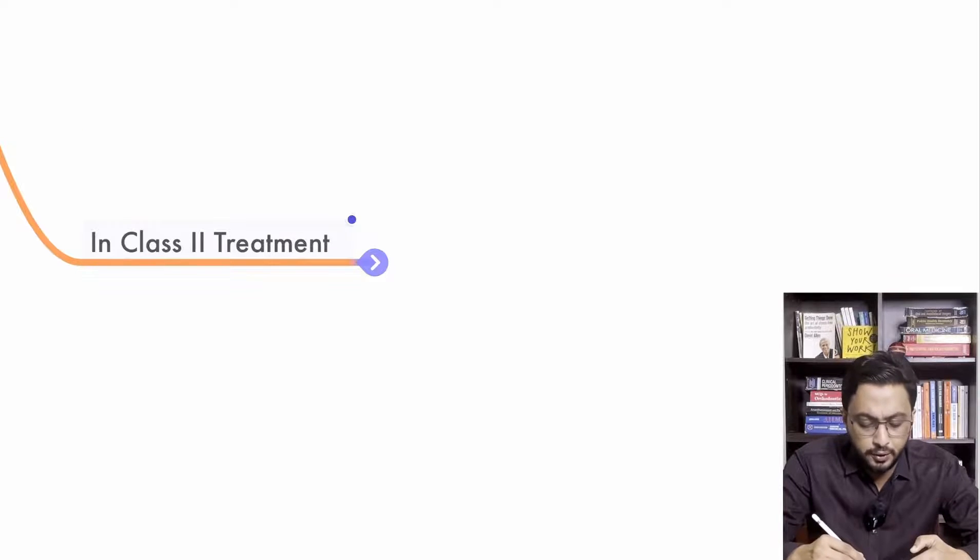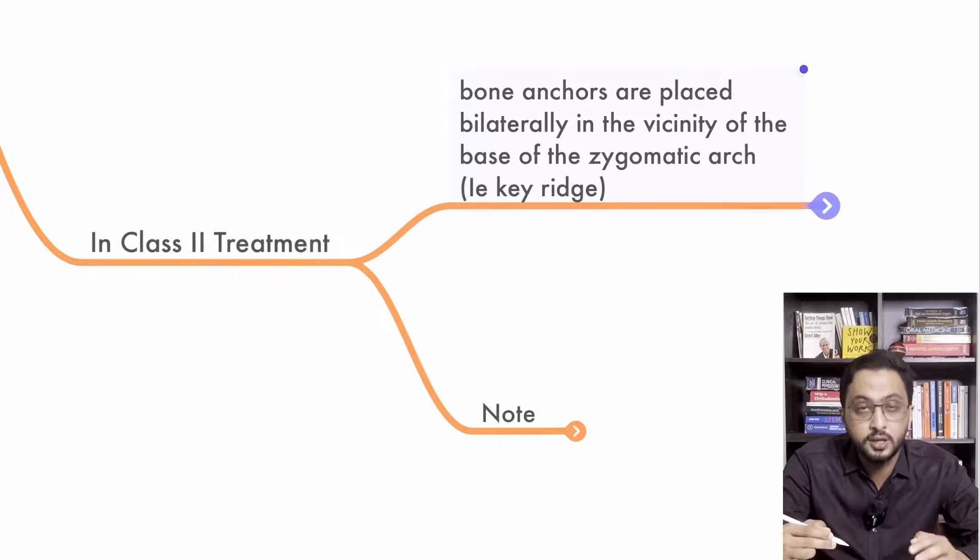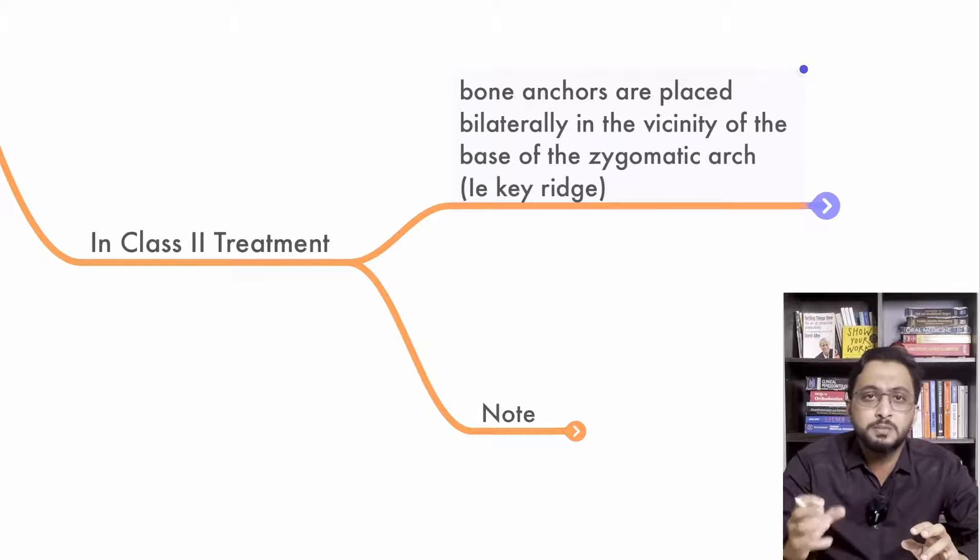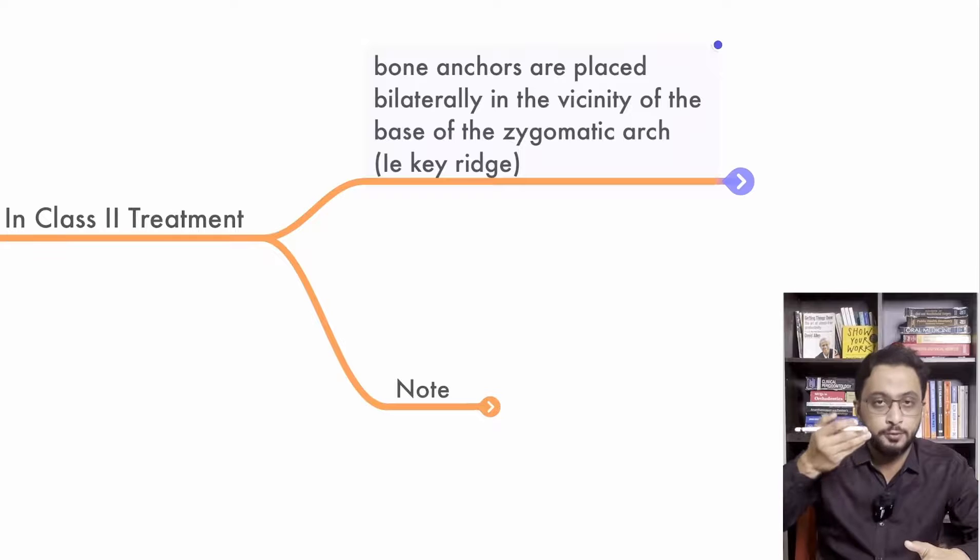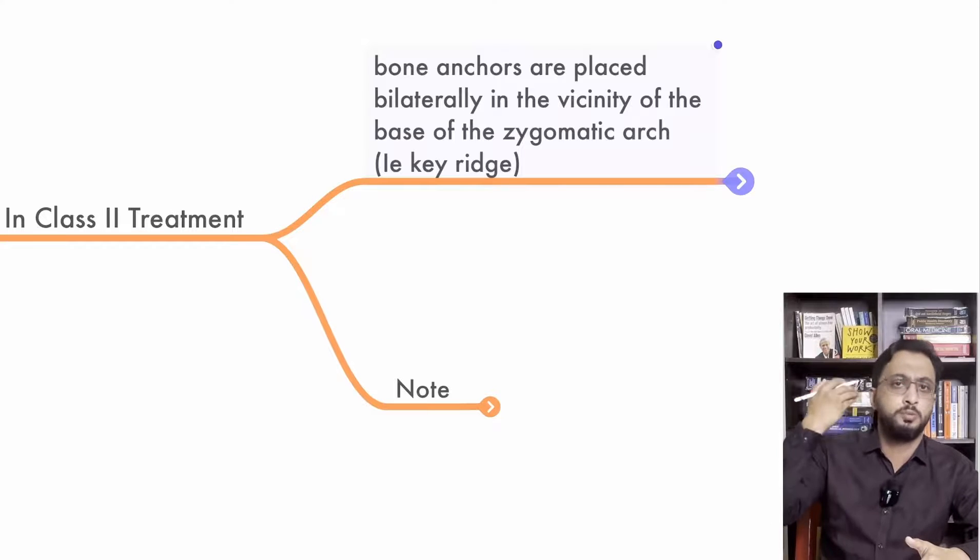Also in case of class 2 treatment, this Key Ridge is the place where you place bone anchors like mini implants. So that you can apply the force for class 2 treatment and push the molar backward.